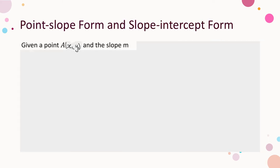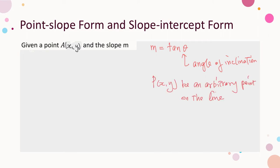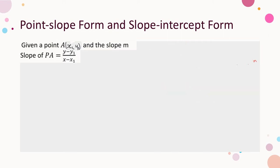This time, we are given a point A(x₁, y₁) and the slope m. Note that the slope m may be converted to an angle θ such that m = tan θ. This angle θ is the angle of inclination of the line. Let P(x, y) be an arbitrary point on the line. Then the slope formed by P and A equals m. Thus we have the equation. This equation, obtained from a given point and a given slope, is called the point-slope form of the line.